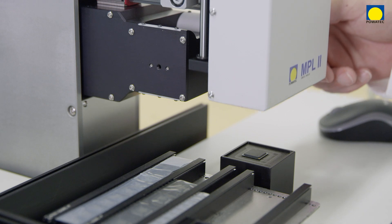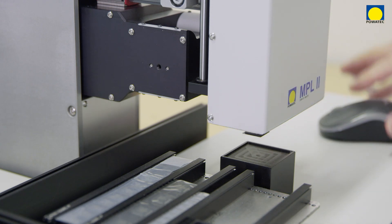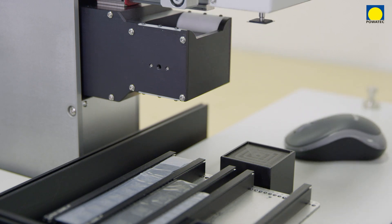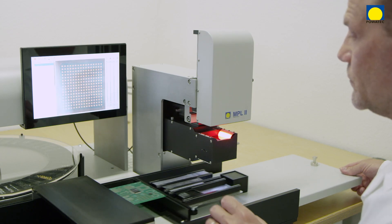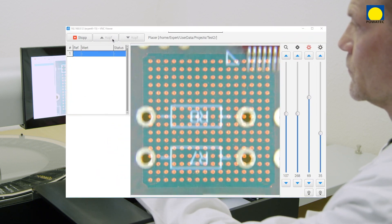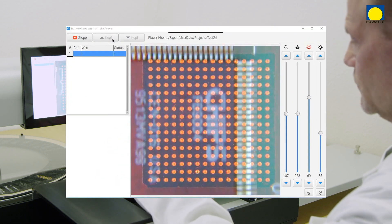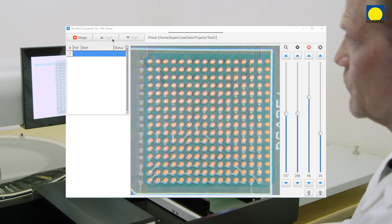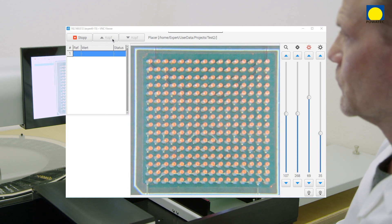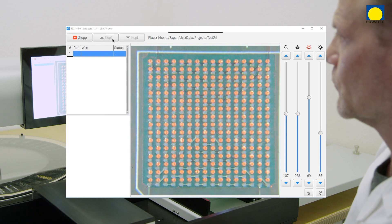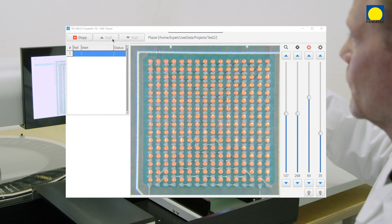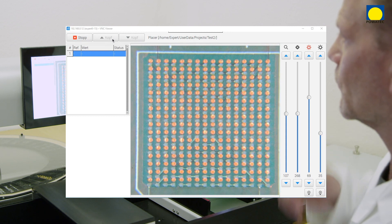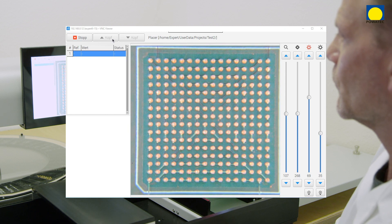To achieve even higher precision in the placement process or when placing components with connections on the underside, we recommend the microplacer. In addition to BGAs, it is also ideal for placement of ICs, QFNs, MLFs, CSPs, and LGAs. The system works with a beam splitter that optically overlays the top side of the assembly and the bottom side of the component in the live image. Pads and pins are aligned and then the component is precisely placed.